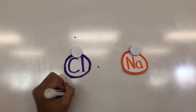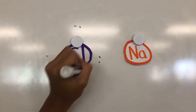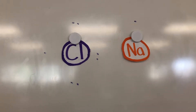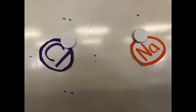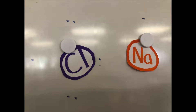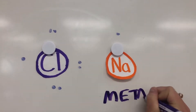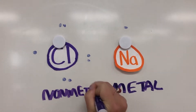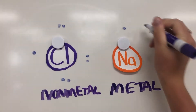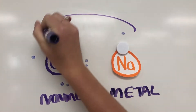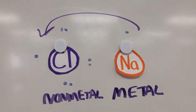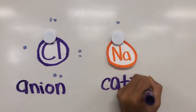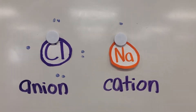Chlorine has seven valence electrons while sodium only has one. And when they react, sodium gives its electron to chlorine because it is a metal. Chlorine accepts the electron to become a negatively charged ion.